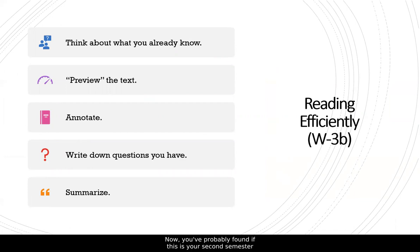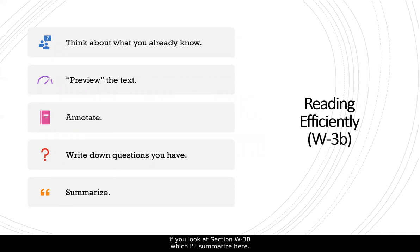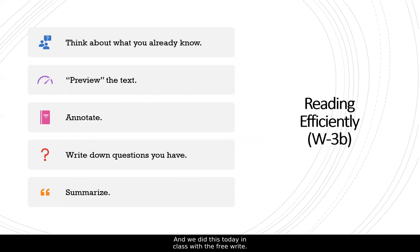If this is your second semester at CSUN or you've been in college more than one semester, you've probably found that you are assigned a good deal of reading, and there may be times where it's difficult to keep up. In the Little Seagull Handbook, section W3B, there are steps you can take to read more efficiently. The first thing you want to do when given something new to read is think about what you already know about the topic — we did this in class today with the free write.